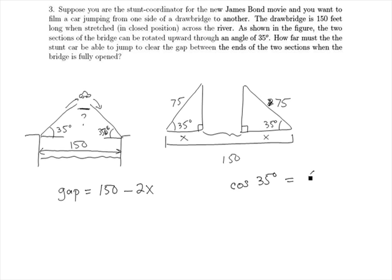Multiplying both sides by 75 gives us that x equals 75 times the cosine of 35 degrees. So now that we know x, we know the gap is going to be 150 feet minus 2 times 75 cosine of 35 degrees. And because we're measuring the distances in feet, we know this gap is going to be also having units of feet.